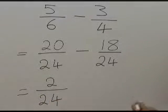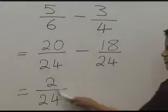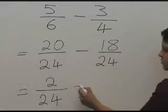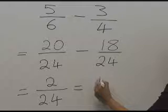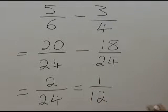We now look at this answer and think about whether we can cancel this number, and because 2 goes into both the 2 and the 24, we can divide by 2, so we get 1 over 12. And that's our final answer.